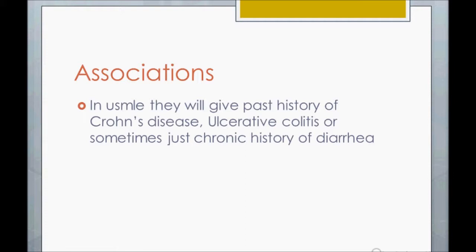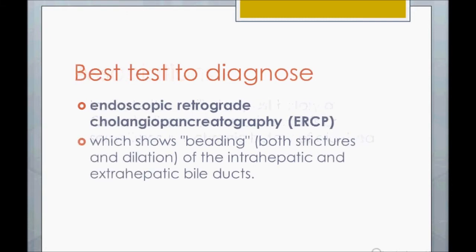In PBC, most patients are asymptomatic — you just see elevated alkaline phosphatase. But in PSC you see active symptoms. The best test to diagnose PSC is ERCP — endoscopic retrograde cholangiopancreatography. A dye is injected and it passes through the bile ducts.